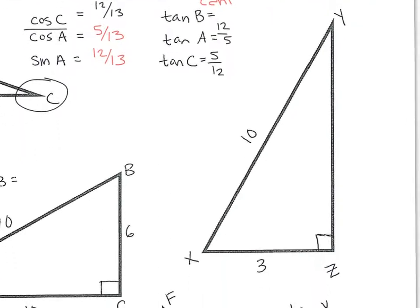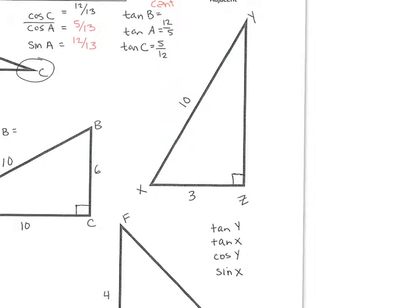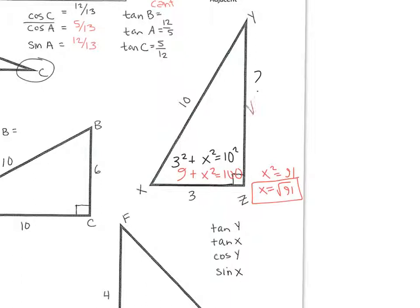Now this tall, skinny triangle — I don't have all three sides, only two. So I'll use the Pythagorean theorem to find the third side: 3 squared plus x squared equals 10 squared, so 9 plus x squared equals 100, so x squared equals 91, and x equals the square root of 91. I believe 91 is prime, so we can't break it down anymore. This side is the square root of 91.